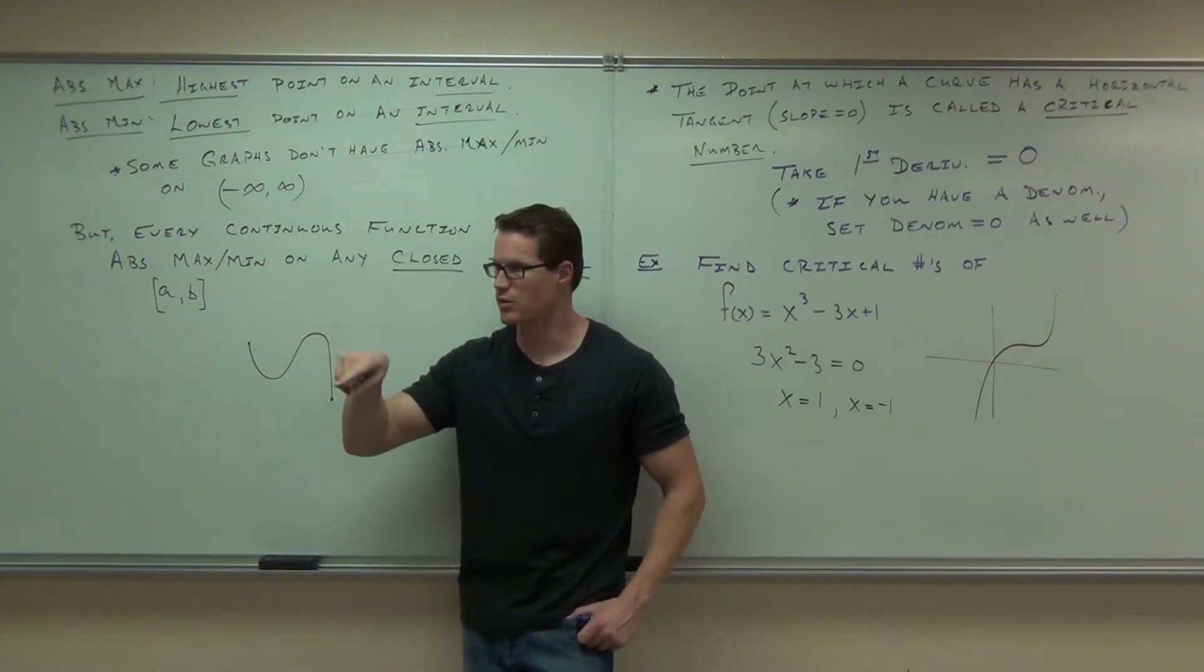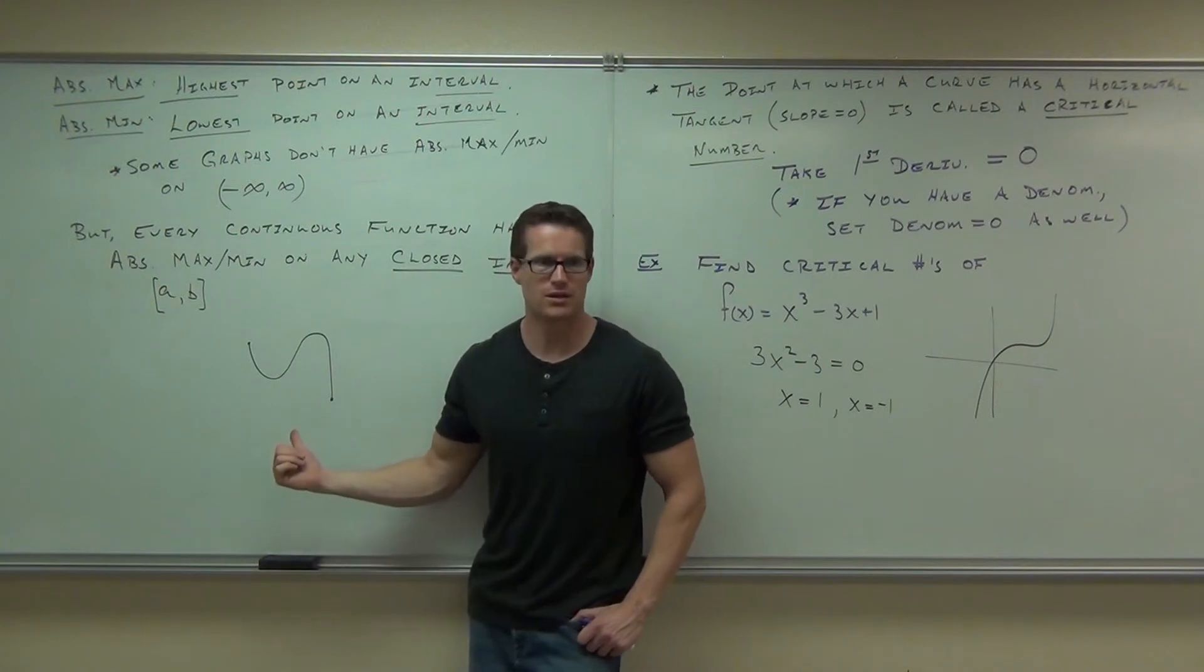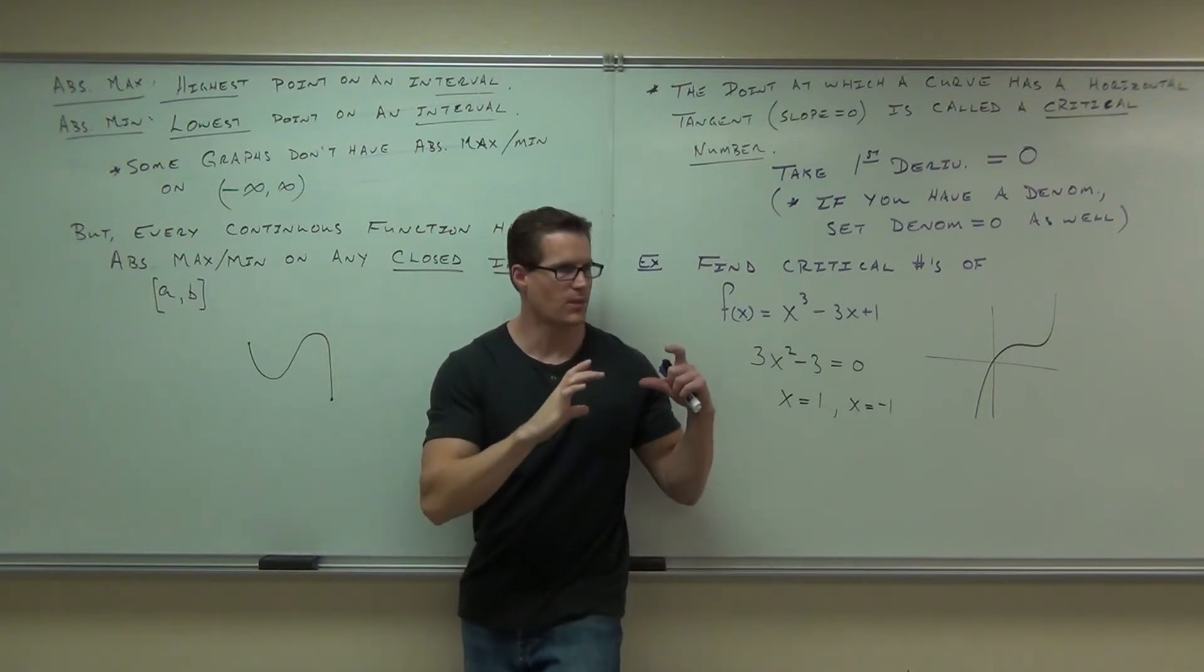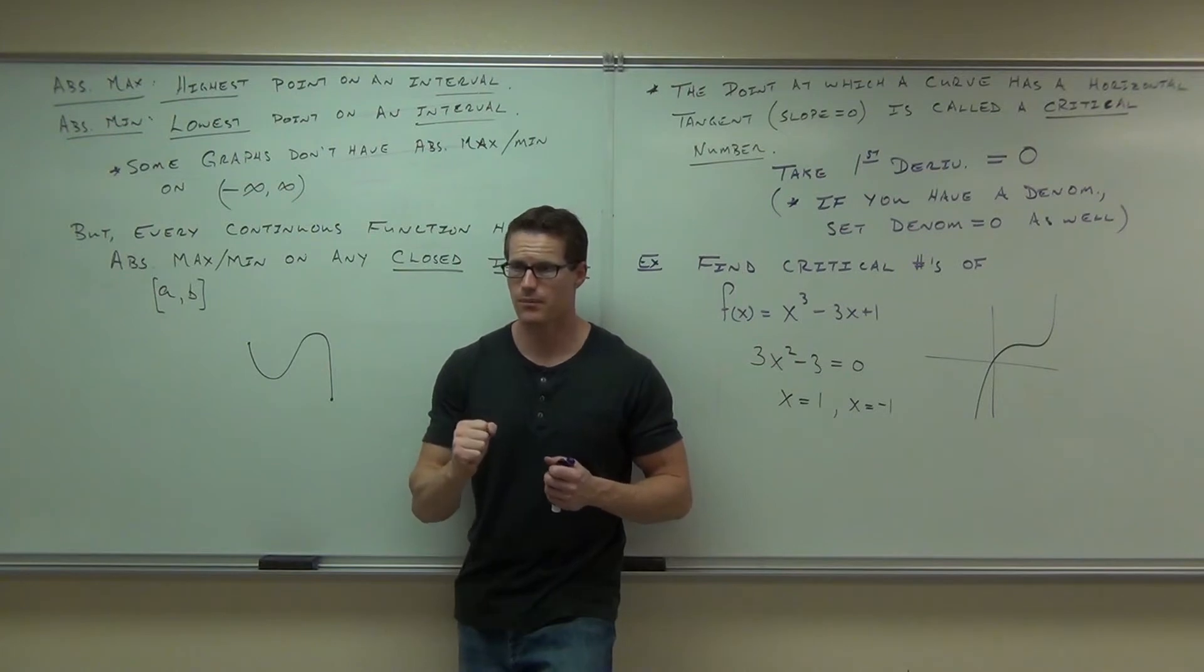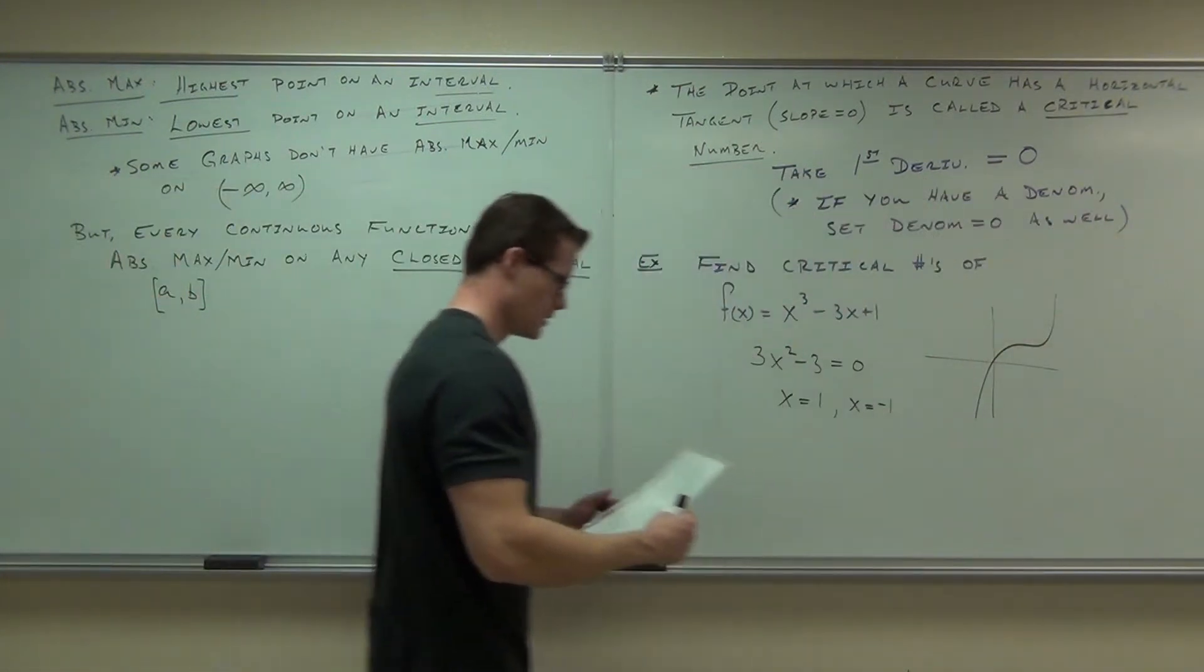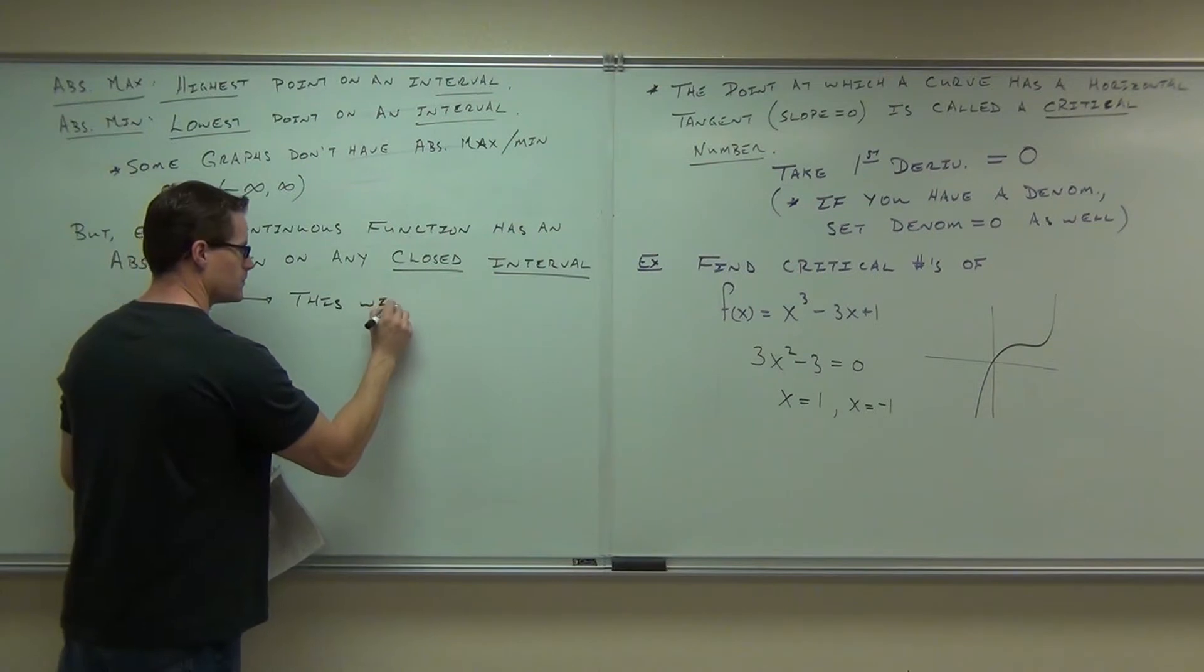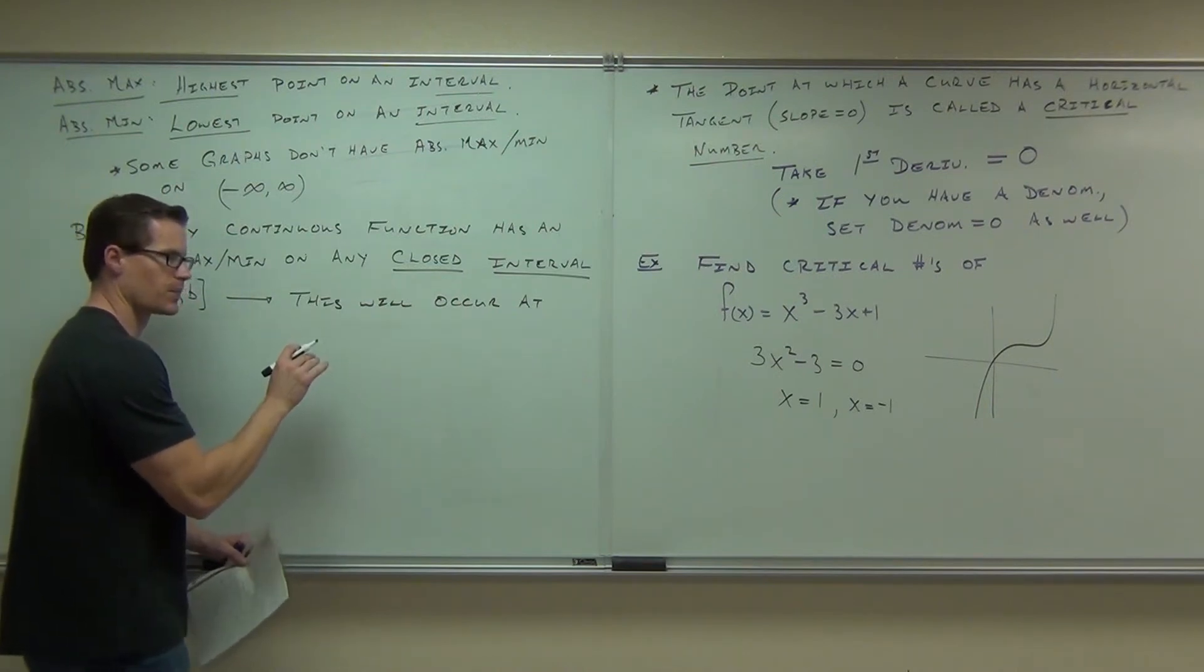It's either switching from going up to going down. That gives us a low point or a high point. Or it's at the end where I would continue to go up but I just chop it off and I go, no, you stopped there. And then it has to occur there. Does that make sense to you? So it's either got to be at an end point or at a relative max or min. That means a critical number. So what's going to happen for your absolute max or min? For any closed interval, it must take place at either a critical number or an end point.